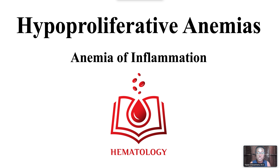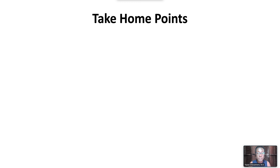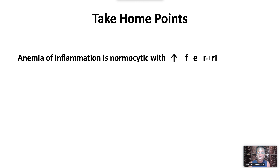Welcome to hypoproliferative anemias, anemia of inflammation. We have the following take-home points. Anemia of inflammation is normocytic with elevated ferritin, decreased serum iron, and decreased total iron binding capacity.